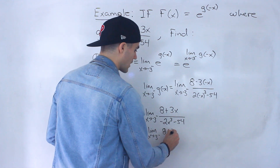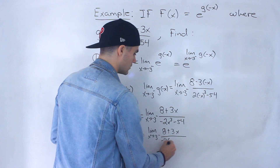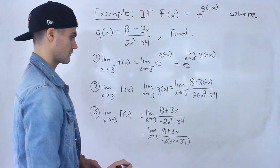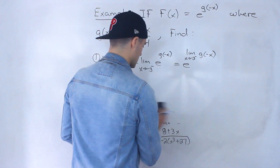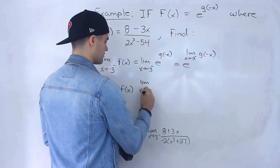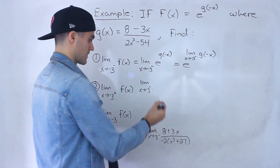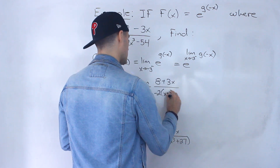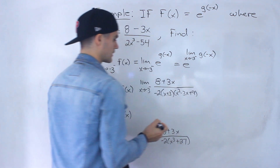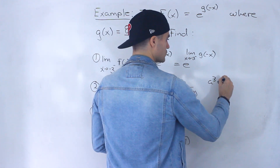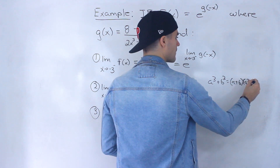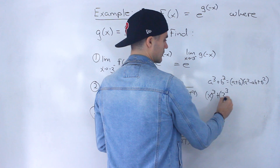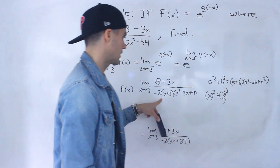To work further, I'll factor. The top, 8 plus 3x, can't be factored. But in the denominator we can take out a negative 2, leaving x cubed plus 27. Now x cubed plus 27 is a sum of cubes. Using the formula a cubed plus b cubed equals (a plus b)(a squared minus ab plus b squared), with a equals x and b equals 3, it factors into (x plus 3)(x squared minus 3x plus 9).